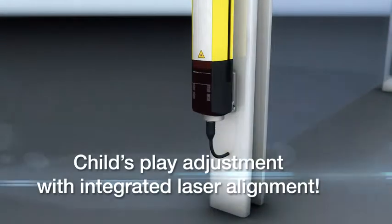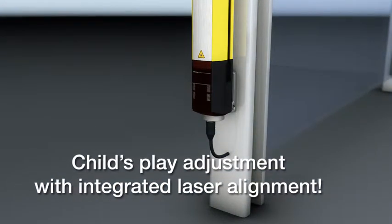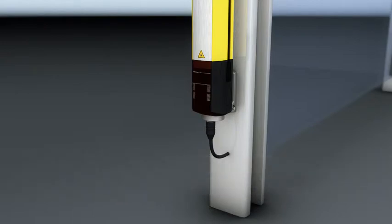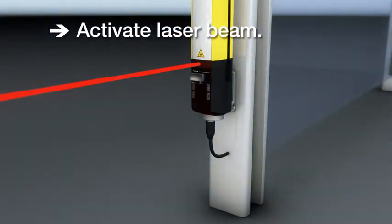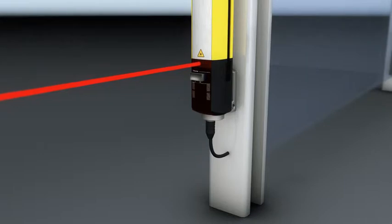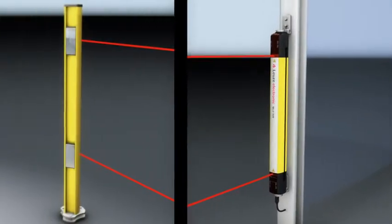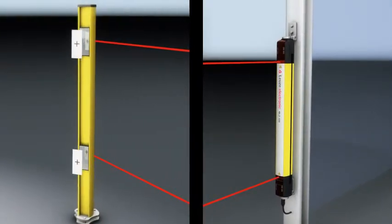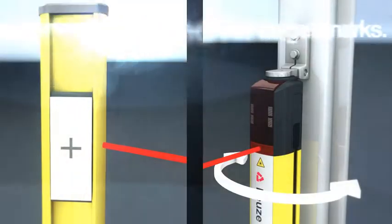Or the integrated laser alignment aid. Simply activate it with a magnet key, and direct the laser beam onto the template at the deflecting mirror column, until the target has been hit.